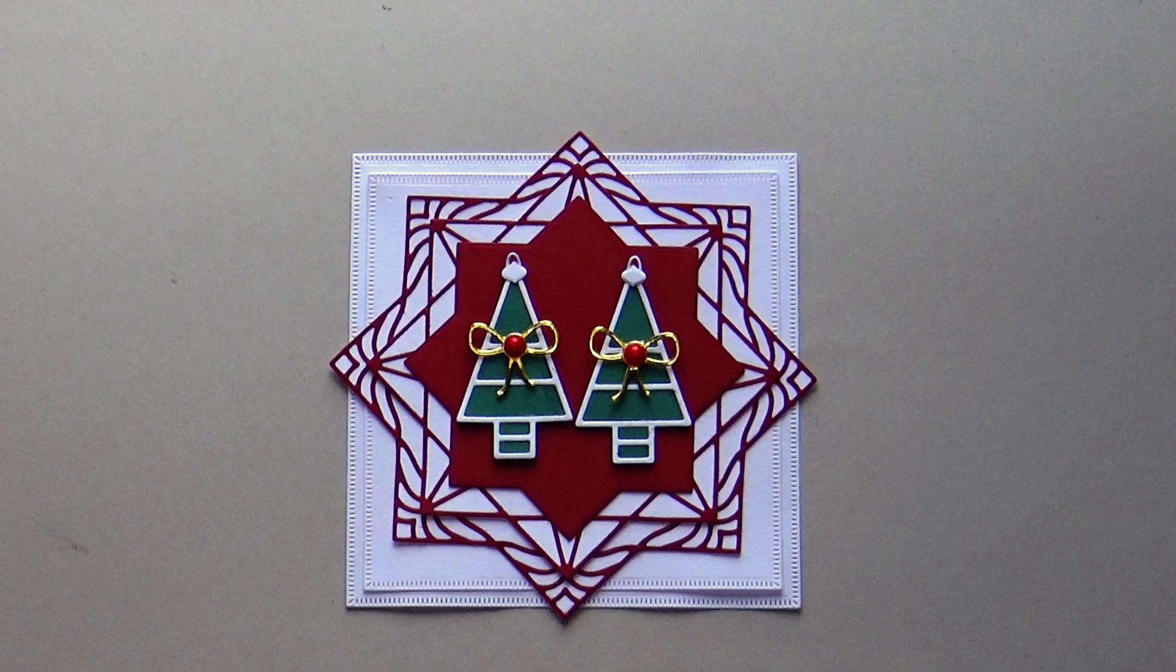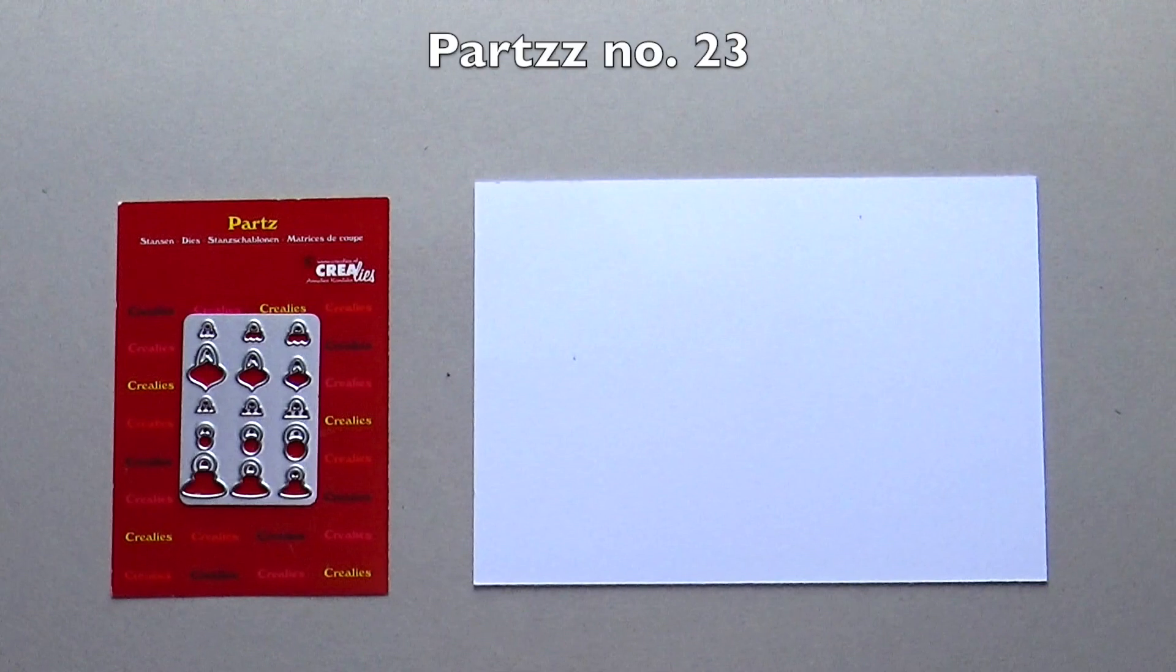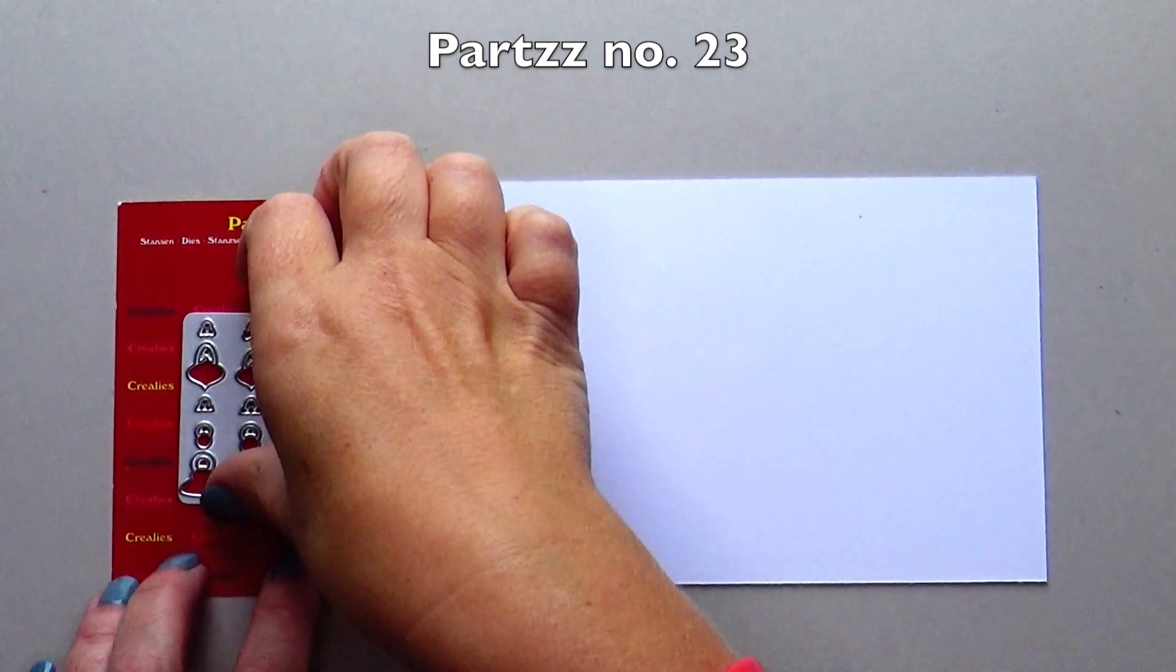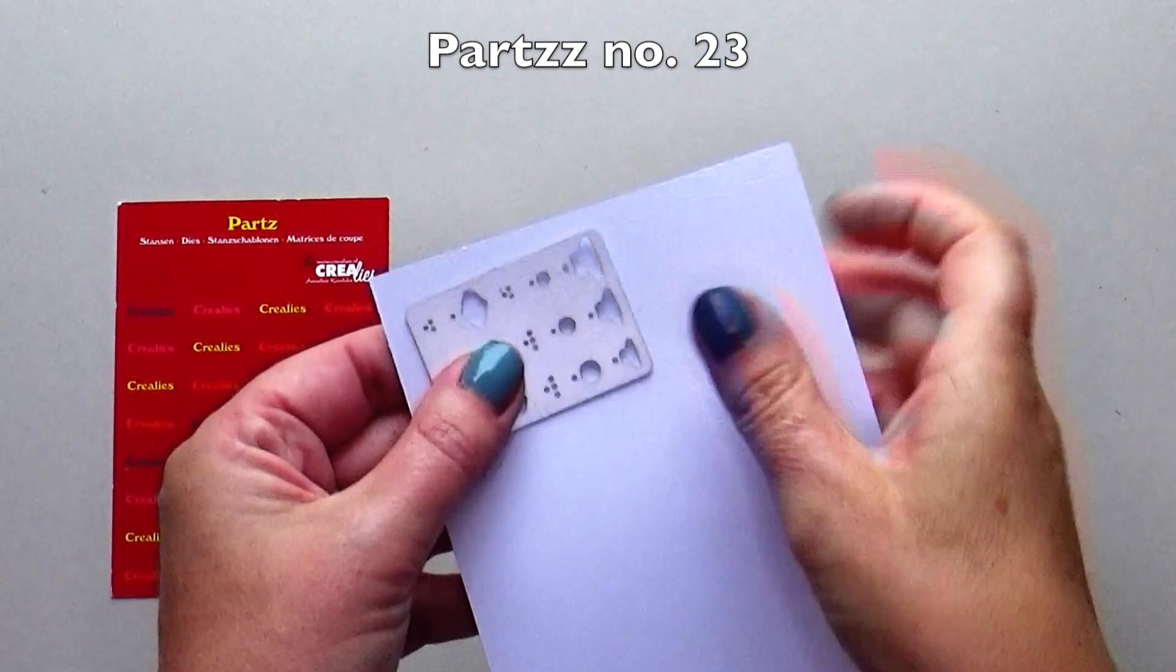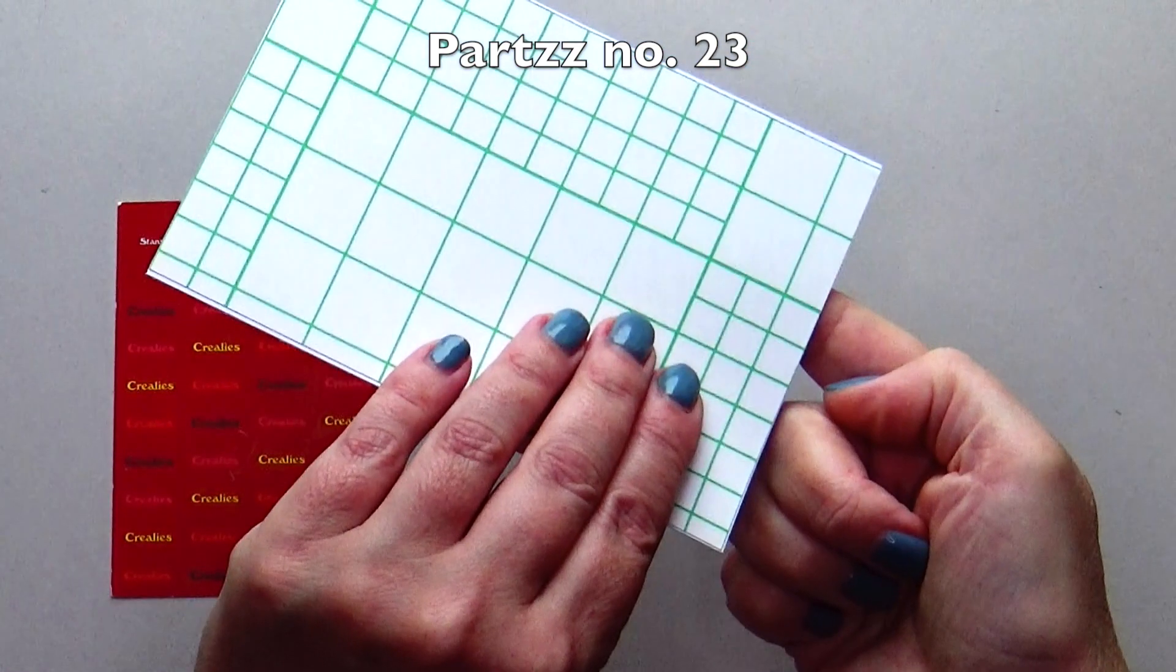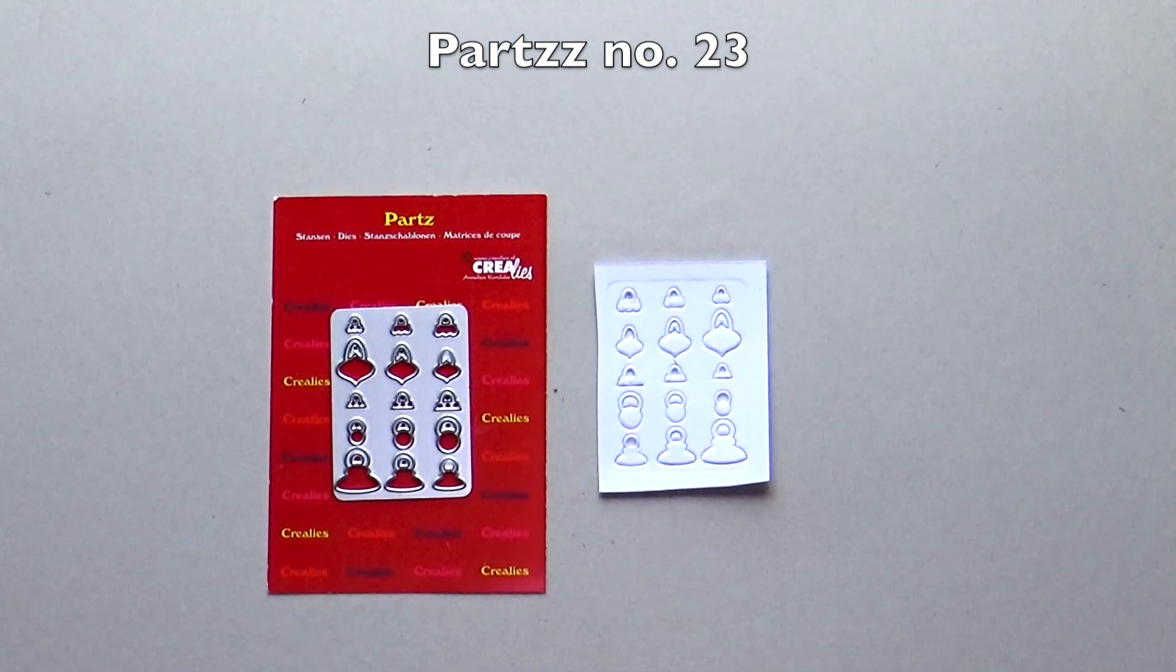I want to put a Christmas ornament as focal point. With parts 23 you can easily turn a shape into a Christmas ornament. Stick Crealies make a sticker out of your die-cut shape behind white cardstock and die cut parts number 23.